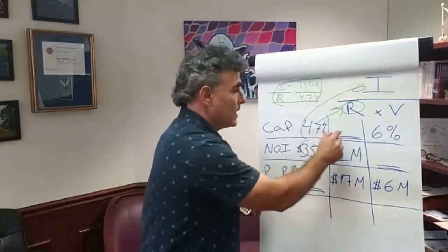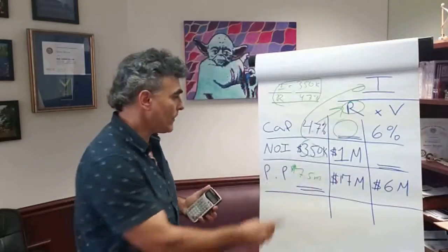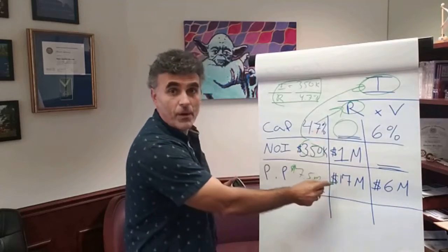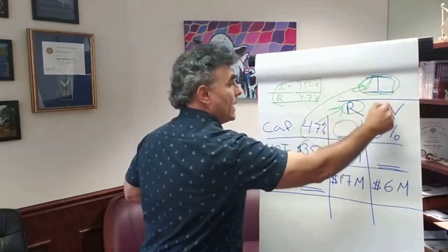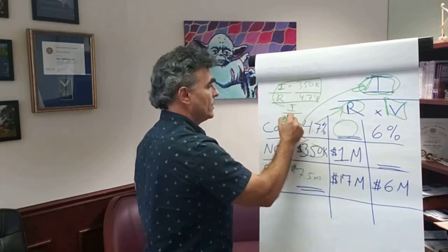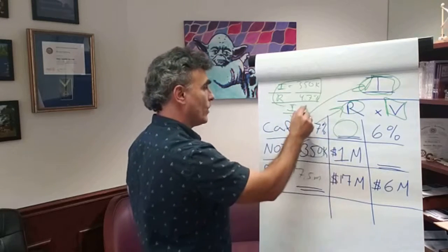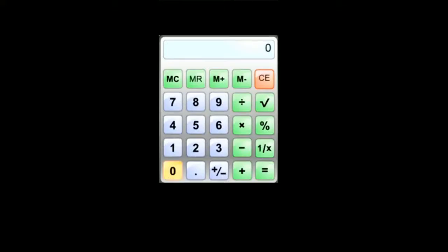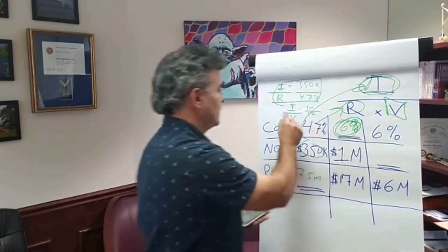Let's do another one. Now we're searching for the cap rate. We have the NOI, which is $1 million, and we have the purchase price, which is $17 million. So again, I over V: the NOI is $1 million and the purchase price is $17 million. So we have 1 million divided by 17 million, and that gives us a cap rate of 6%.